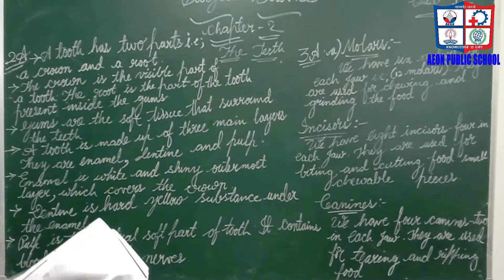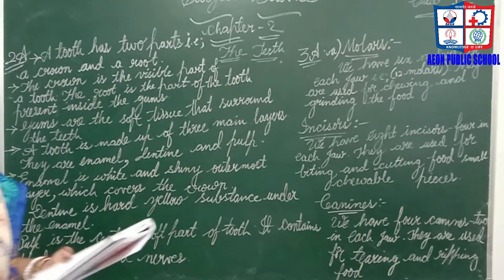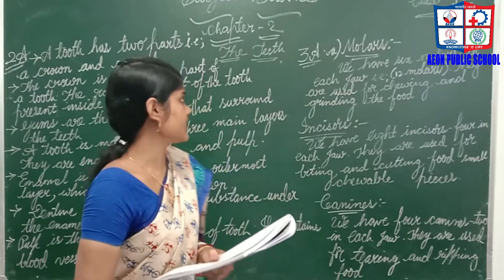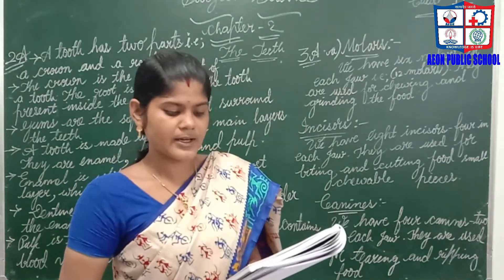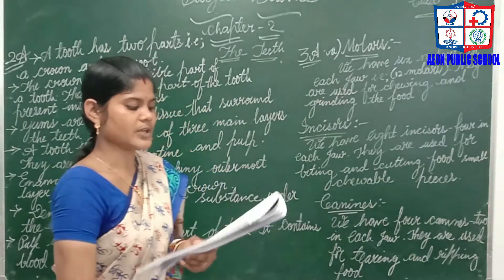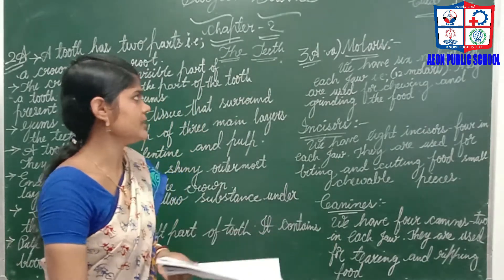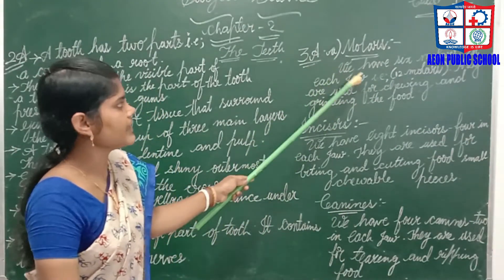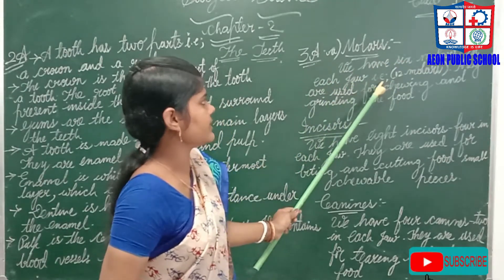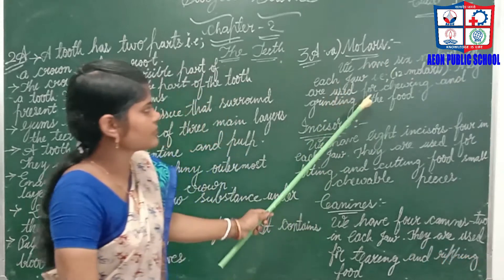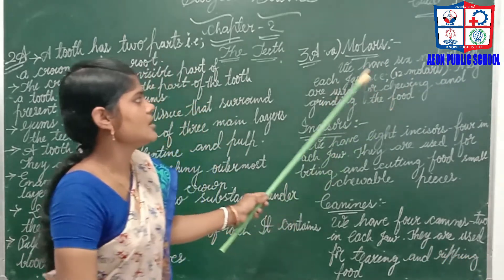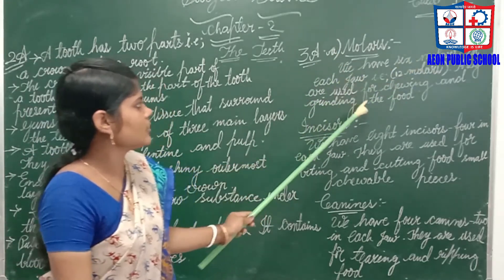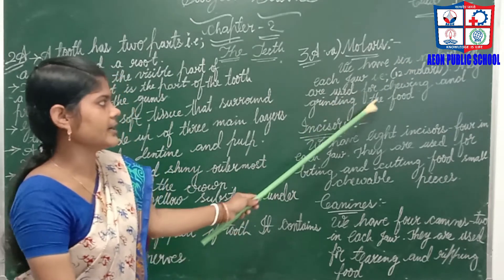Third question: write the number and function of each of the following kinds of teeth — A) molar, B) incisor, and C) canine. For molar: we have six molars in each jaw, that is twelve molars in total. They are used for chewing and grinding food.